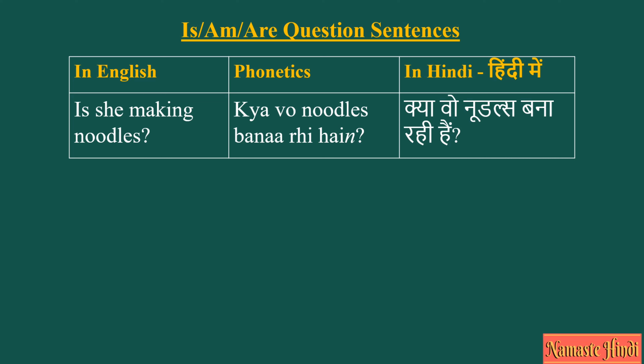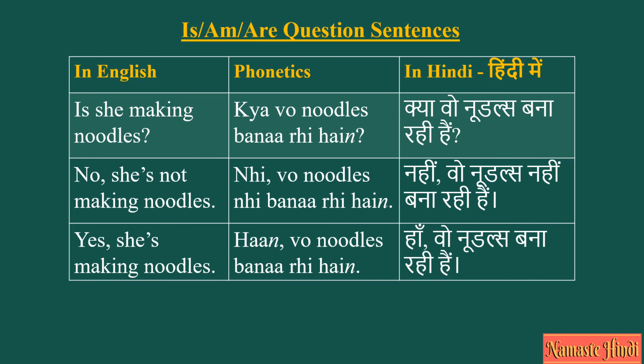Let's look at some more sentences. Is she making noodles? In Hindi: Kya wo noodles bana rahi hai? We say kya at the beginning of the sentence because that's the question. In response you can say no — she is not making noodles: Nahi, wo noodles nahi bana rahi hai. Or in a positive sentence — yes, she is making noodles: Haan, wo noodles bana rahi hai.